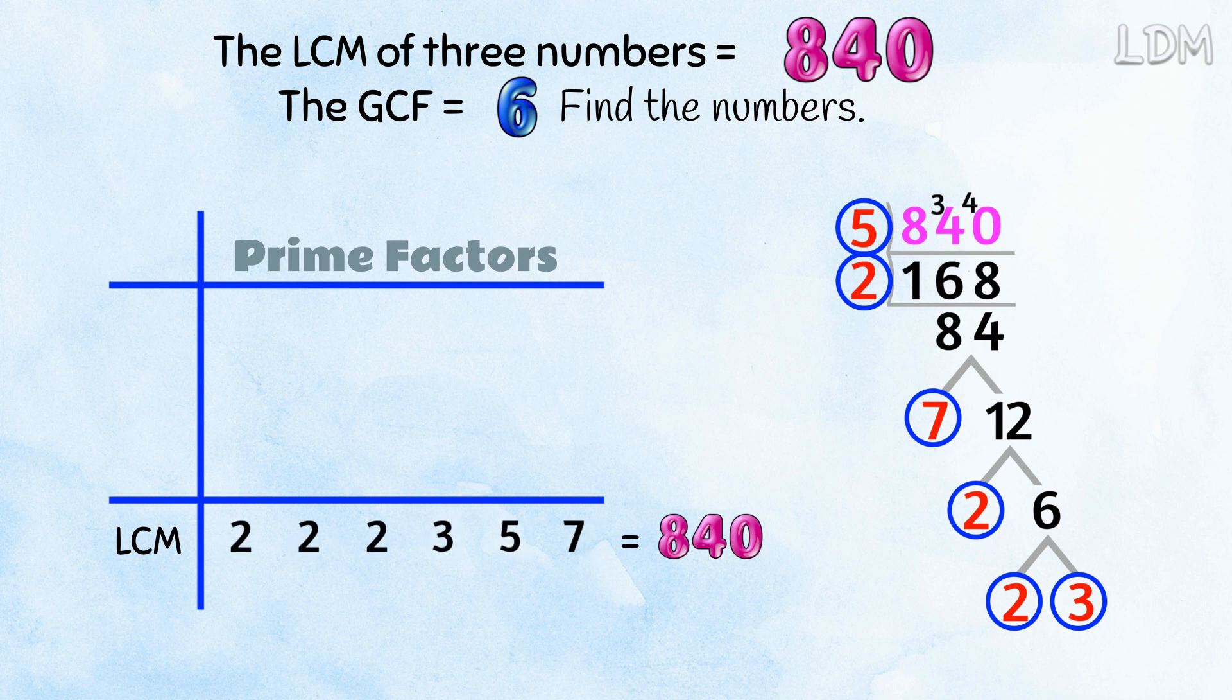We know the GCF is 6. The prime factors of 6 are 2 and 3. So they're the primes of the GCF. That means all 3 numbers need the primes 2 and 3.